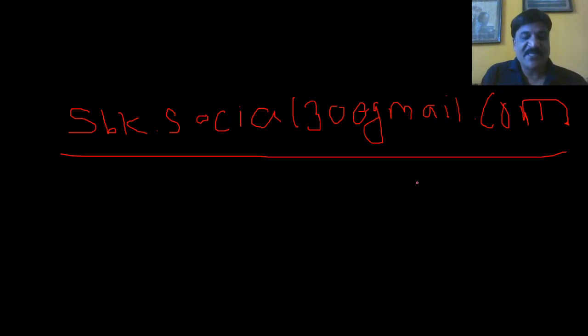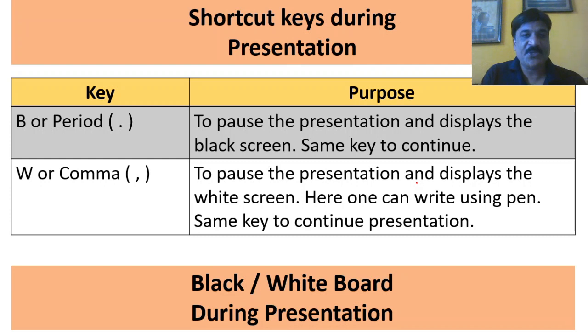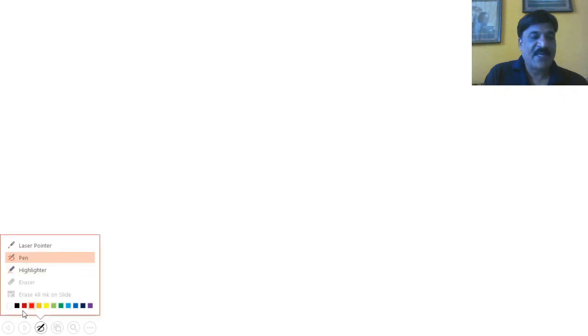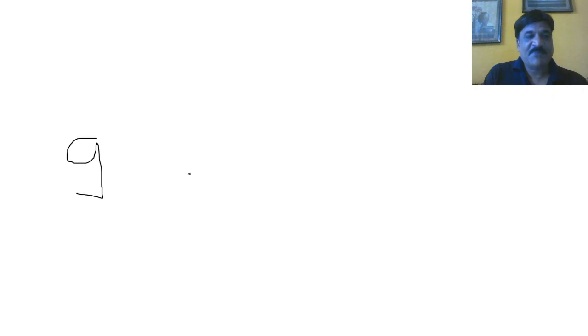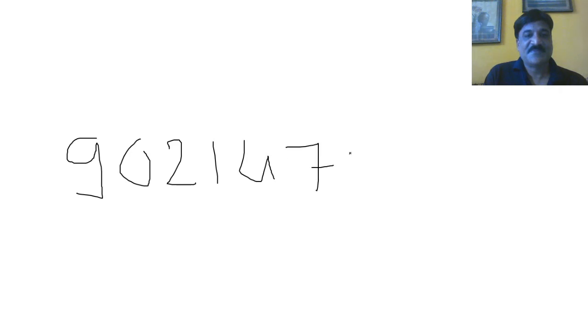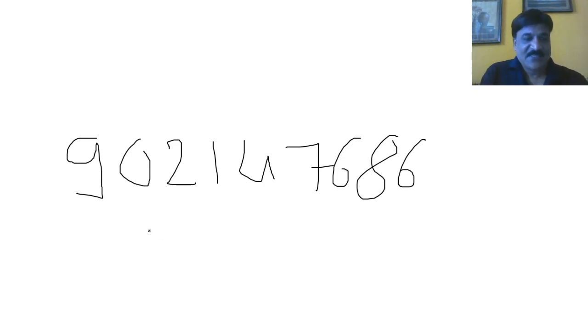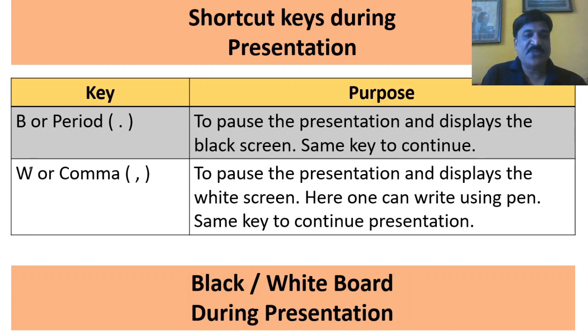In order to resume our presentation, simply press B again. Now, in order to display the whiteboard, simply press W. Again, you can use a pen over here. I am using black color and writing here — suppose say, my mobile number. This is how you can use your whiteboard during your presentation. Press W again in order to resume your presentation. You can use these two keys to display the blackboard or whiteboard.